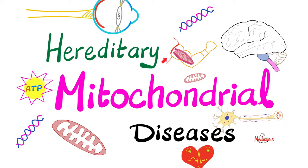We talked about glycogen storage diseases, which can affect the liver, muscles, and heart. We talked about reducing sugars in the urine, lactose intolerance, galactosemia, and the pancreatic islet cell tumors like insulinoma, glucagonoma, somatostatinoma, gastrinoma, and even VIPoma. Then we talked about cystinuria, cystinosis, homocystinuria, and Marfan syndrome.